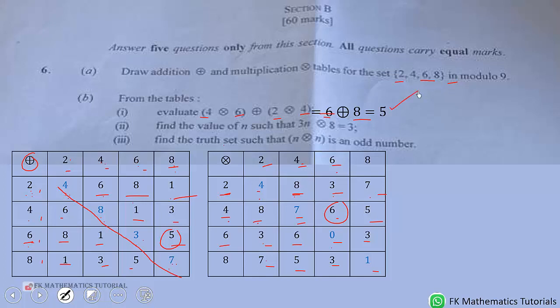Now let's come to the Bii. Find the value of N such that 3N⊗8 equals 3. You come to the table and look for a number in the multiplication table that goes with 8 to give 3. Which number goes with 8 to give 3? The number is 6.